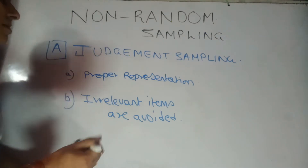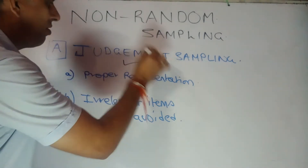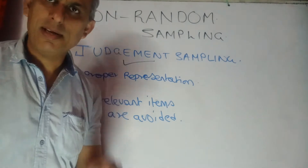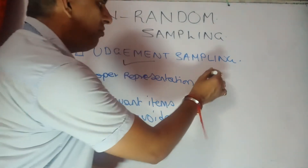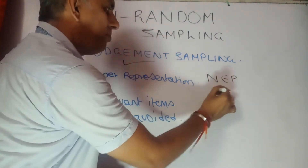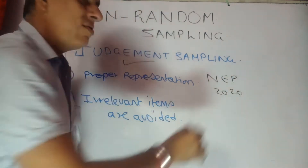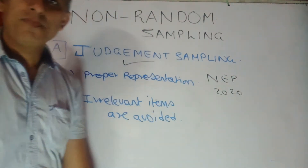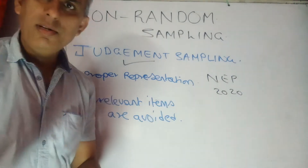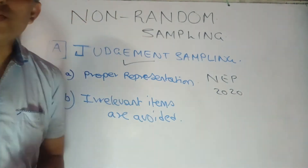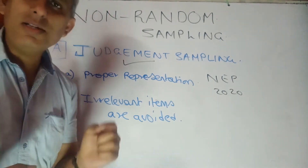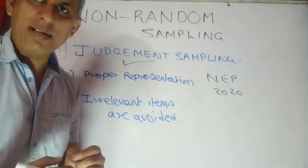We'll take the first method of non-random sampling today, that is judgment sampling. I'll quote an example — all of you are aware that the National Education Policy 2020 is out and has brought some important changes, some of them good and some of them not so good.